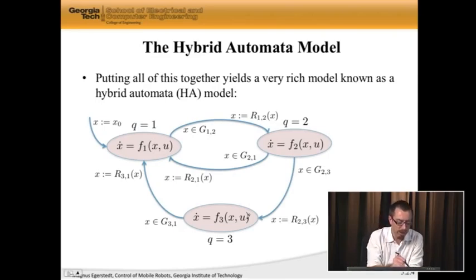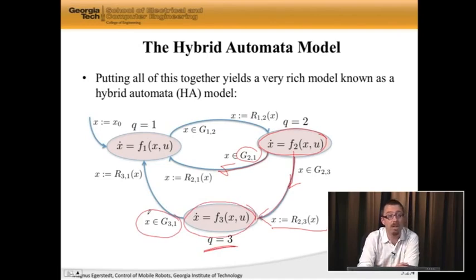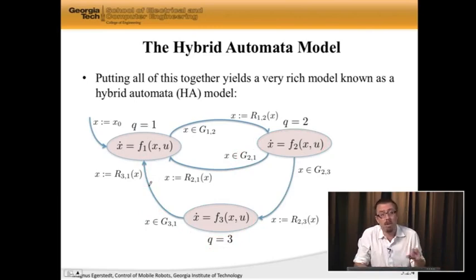The way this works is, we start with x equal to x naught, we end up in mode q equals 1, where we're evolving according to this differential equation. If x belongs to g12, then we're going to move over into this mode, and on our way, we're going to reset the state. Now, the state is here with dynamics for q2 mode. If g21 becomes true, I jump this way. But if g23 becomes true, I jump that way. I change my state, possibly according to this reset map. Then when x enters g31 guard, it jumps back into q equals 1, with a new possible reset. So this is the general model.